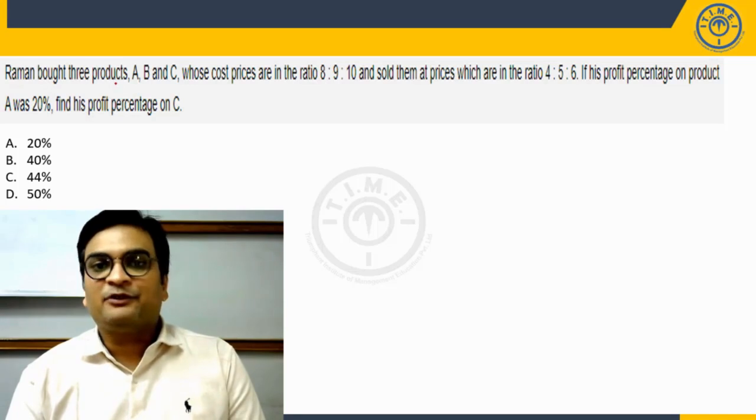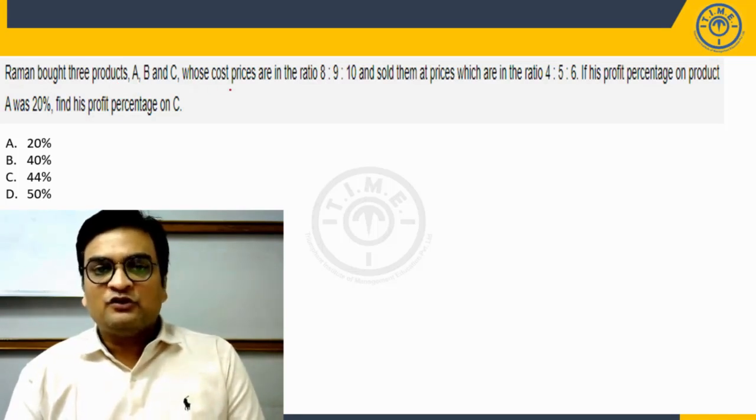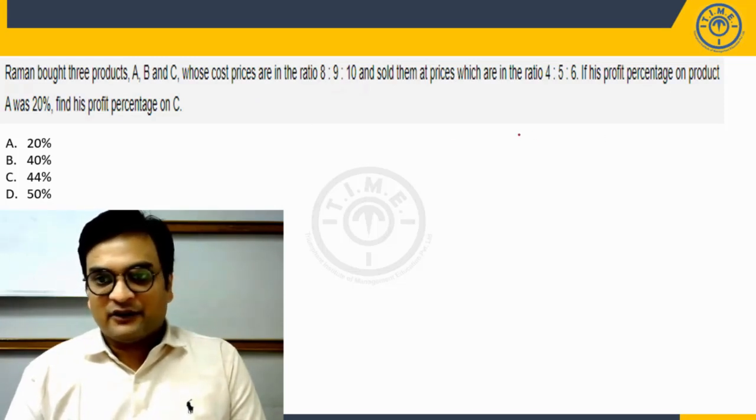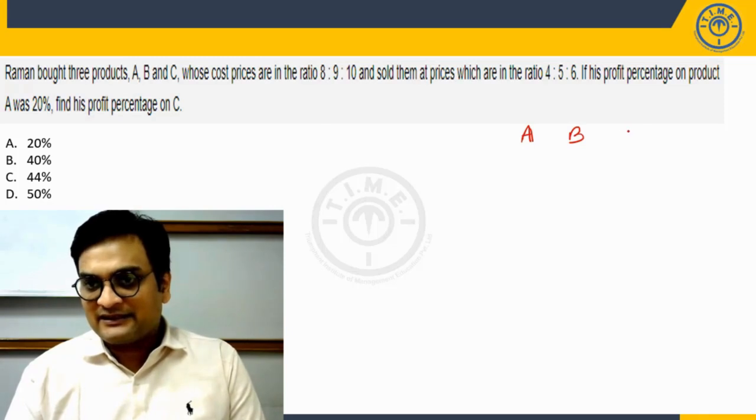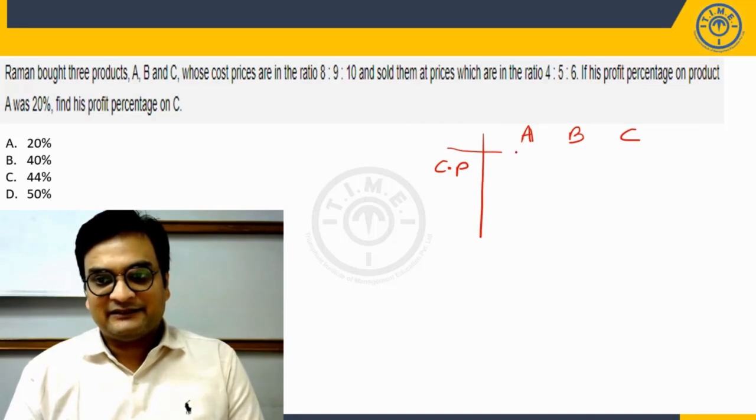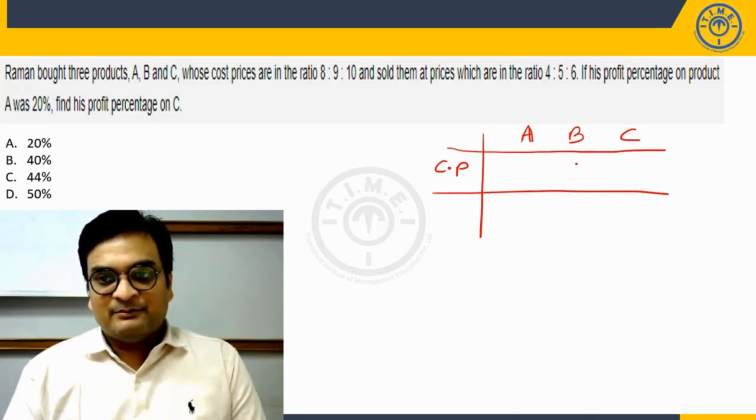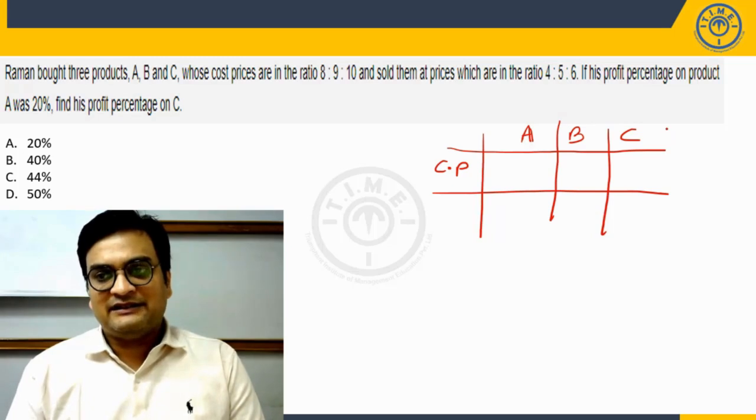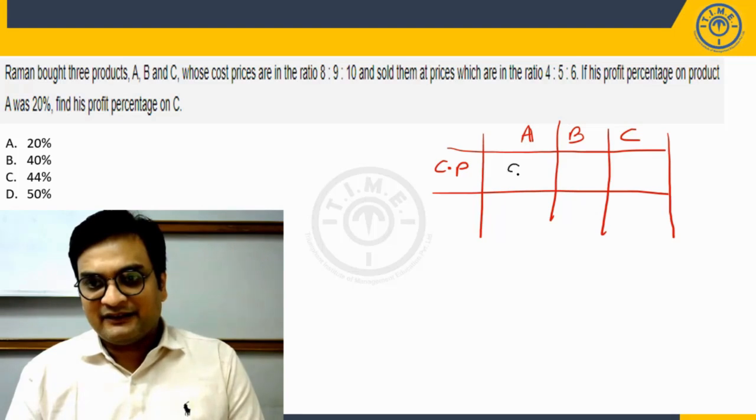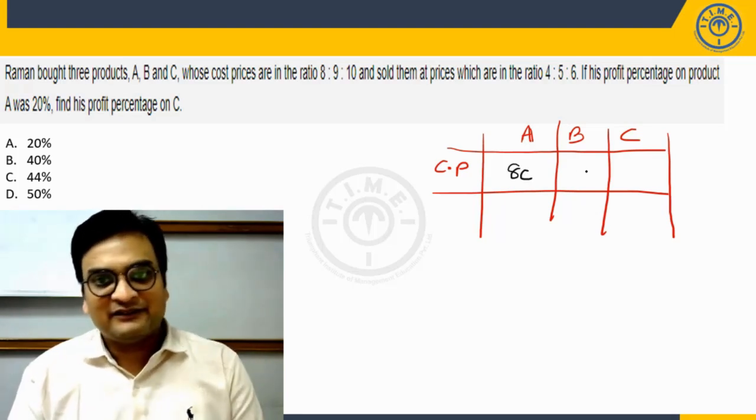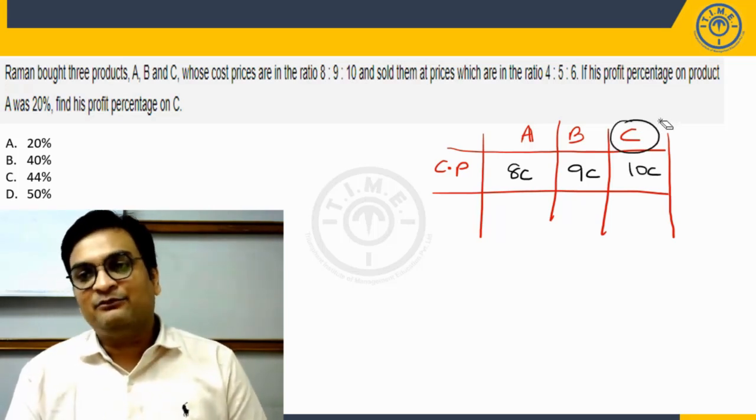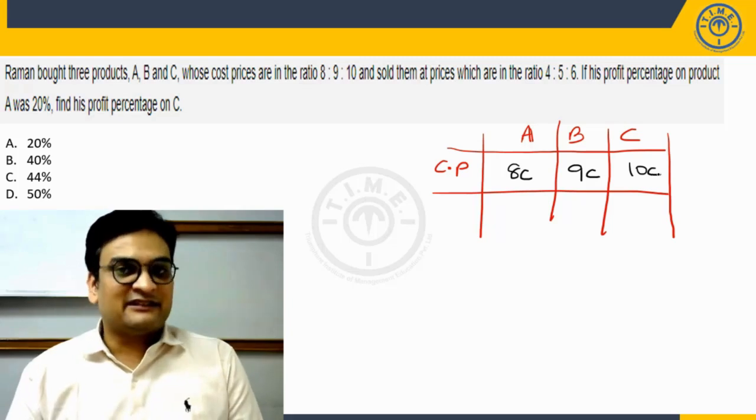The question says Raman bought three products A, B, and C whose cost prices are in the ratio 8 is to 9 is to 10. So I may take the three products as given to me as A, B, C. Let us say their cost prices are, I'll take A as 8C, where C is cost price, then B will be 9C and C will be 10C. Please understand this is the name of the product, this is the variable C cost price. Please differentiate.